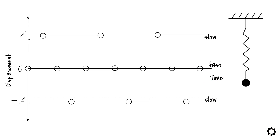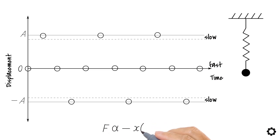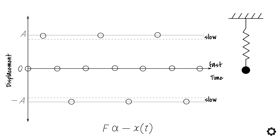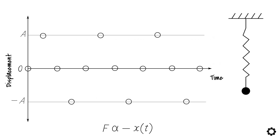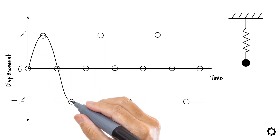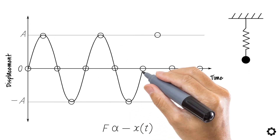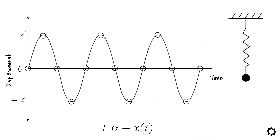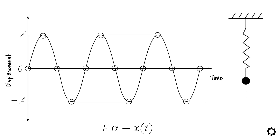Why is that? The restoring force is proportional to the displacement in the opposite direction. So the farther the mass moves, the stronger the push and pull from the spring gets, making it decelerate while approaching the extreme positions and accelerate while leaving. Assuming zero air resistance, the displacement plot will look like a sine function.